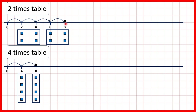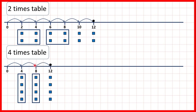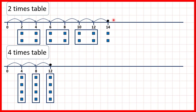Carrying on, counting in 2's, we have 10 and then 12 — that's given us another 4 counters. If we keep counting in 4's, the next multiple of 4 is 12. So 12 is 6 times 2 and 3 times 4. Counting on in 2's, we have 14 and then 16, and 16 is also the next multiple of 4.